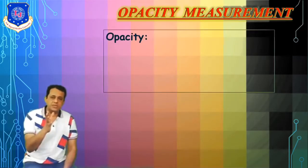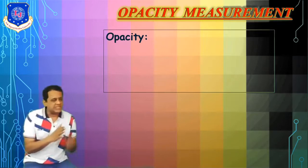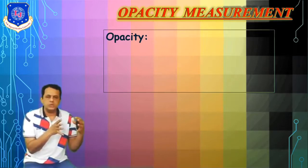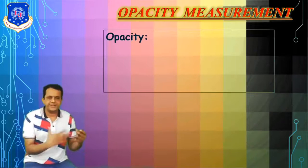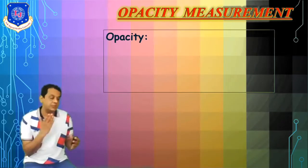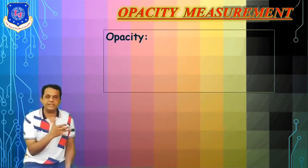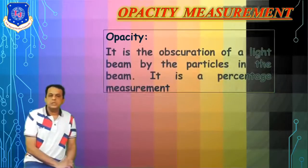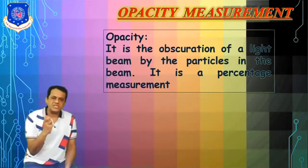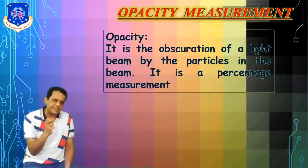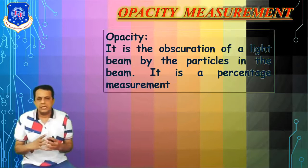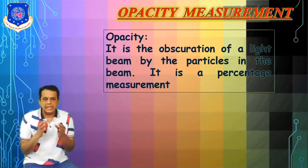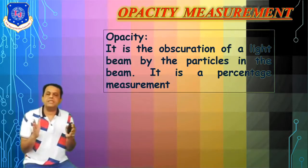What is opacity basically? Opacity is related to transparency — how much a material or liquid is transparent, how much light can penetrate and pass through it. Opacity means the expression of light beam absorption by particles, and it is a percentage measure.